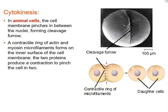Mitosis is typically followed by cytokinesis, though it doesn't have to happen — sometimes you have multinucleated cells with multiple nuclei. But typically, after mitosis is complete, cytokinesis takes place. In animal cells, a cleavage furrow forms, and a contractile ring of microfilaments pinches the cell in half.